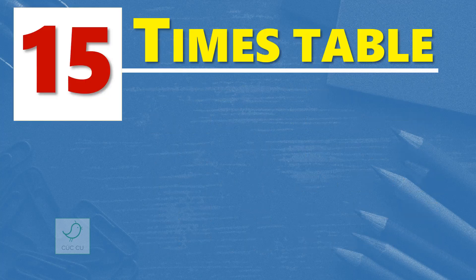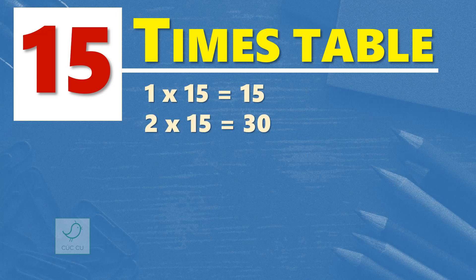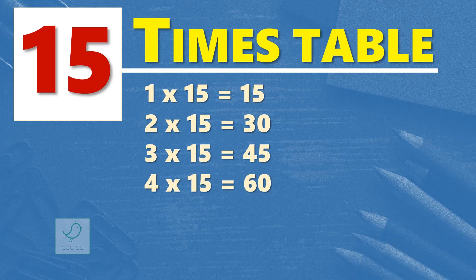One times 15 is 15. Two times 15 are 30. Three times 15 are 45. Four times 15 are 60. Five times 15 are 75.